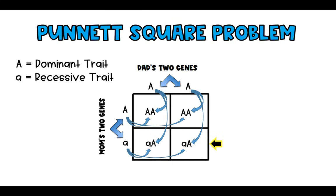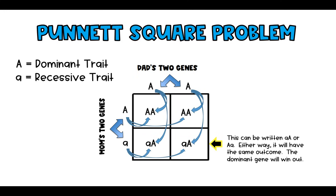Students often ask: does it matter if I write lowercase a before uppercase A, or uppercase A first? As we work through these problems, it doesn't really impact anything, because dominant traits always win out regardless of order. If there's a dominant trait in the square, the child will have the dominant phenotype and the recessive trait will not win out.